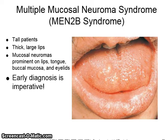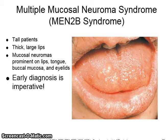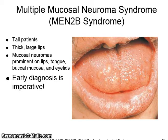Multiple mucosal neuroma syndrome, also known as MEN-2B syndrome, includes tall patients with thick, large lips and mucosal neuromas prominent on the lips, tongue, buccal mucosa, and eyelids. Early diagnosis of this syndrome is imperative.